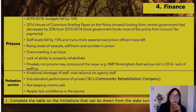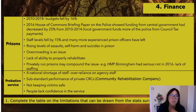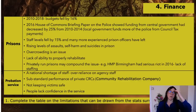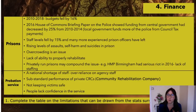Prisons and probation service, 2010 to 2018: prison budgets fell by 16%. A 2016 House of Commons briefing paper on policing showed funding from central government decreased by 25% from 2010 to 2014 — local government funds more of the police from council tax. Staff levels fell by 15% and many more experienced prison officers have left. This is why rehabilitation is not happening, why it's disorganised, and why prisons are failing Ofsted. Losing experienced staff is a huge worry: more experienced officers handle situations better, whereas less experienced newcomers don't necessarily have that initiative built up over years.